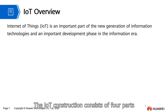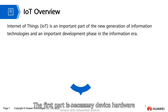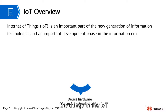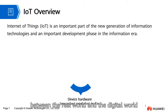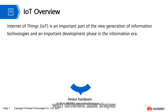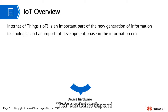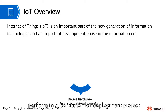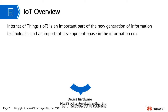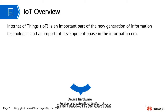The IoT construction consists of four parts. The first part is necessary device hardware. The things in IoT devices serve as interfaces between the real world and the digital world, with different sizes, shapes, and technical complexity. Their attributes depend on the tasks they need to perform in a particular IoT deployment project. IoT devices include many types of sensor devices and networked devices.